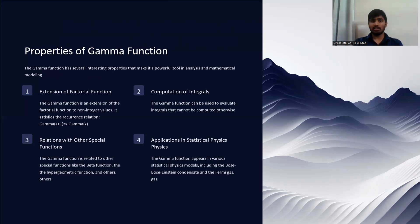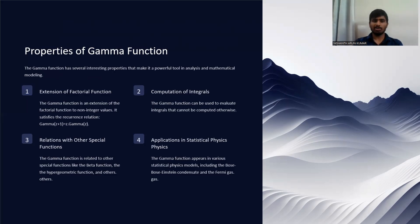The second property is computation of integrals — the gamma function can evaluate integrals that cannot be computed otherwise. Third, it is related to other special functions like the beta function and the hypergeometric function. Fourth, the gamma function appears in various statistical physical models, including the Bose-Einstein condensate and the Fermi gas.